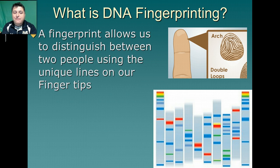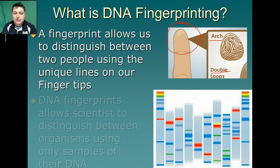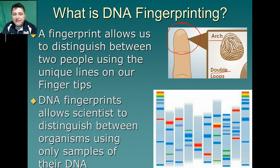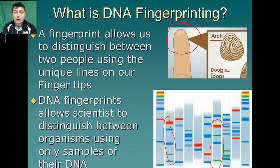When we think of fingerprints, we usually think of those at the tips of our fingers — the arches, loops, and whorls that allow us to distinguish individuals. A DNA fingerprint allows us to distinguish between organisms using their DNA, because our DNA is unique and each individual is going to have a different DNA fingerprint.